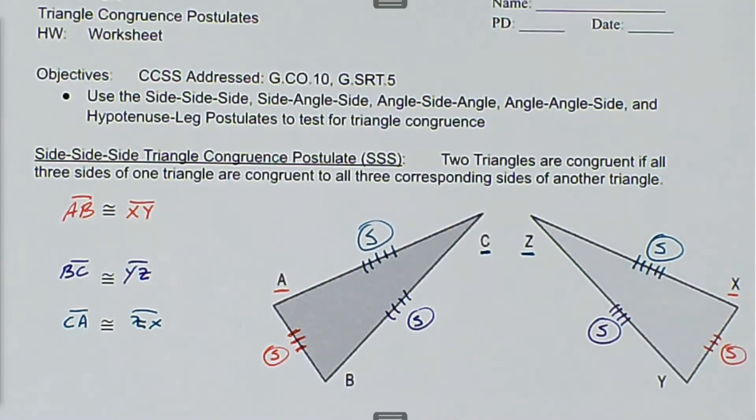The reason they're congruent is by side, side, side. Now I wrote these in color, and we'll see some examples later, but it goes red, green, blue; red, green, blue. As long as they go in the same order, then they will be congruent.